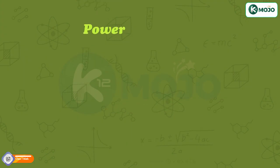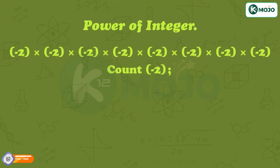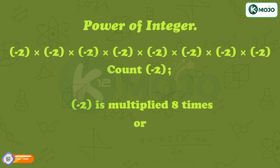Power of Integer. Count how many times minus 2 is multiplied. Here, minus 2 is multiplied 8 times, and it can be written as minus 2 raised to the power 8.